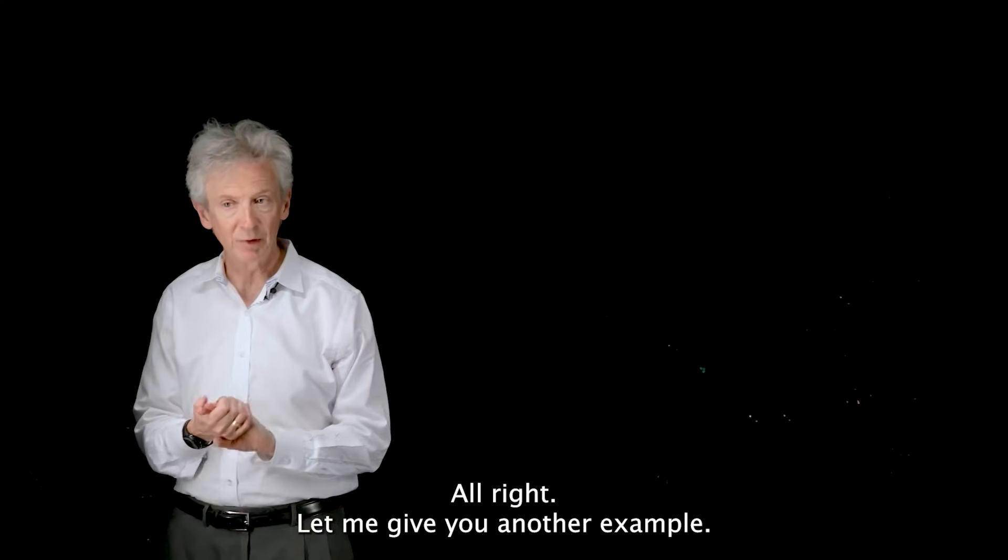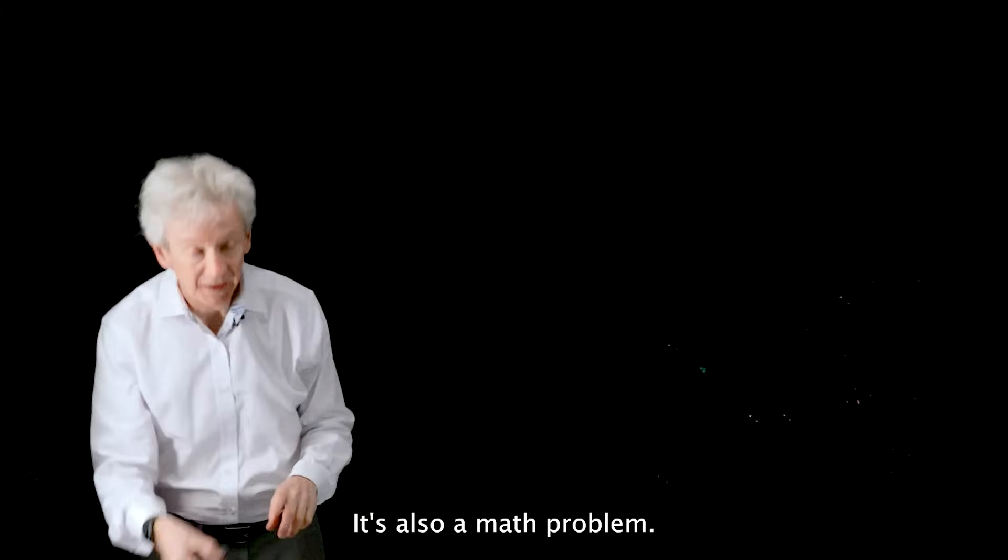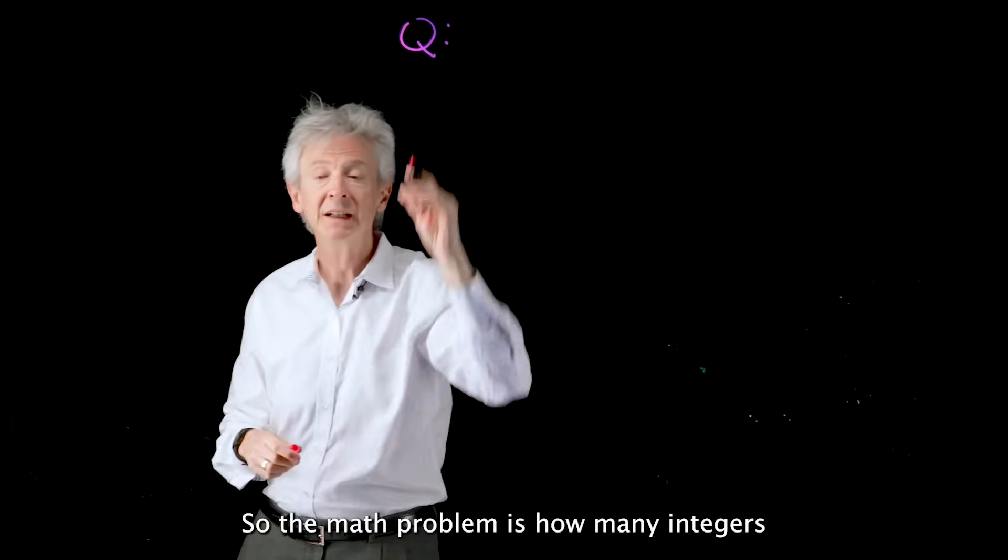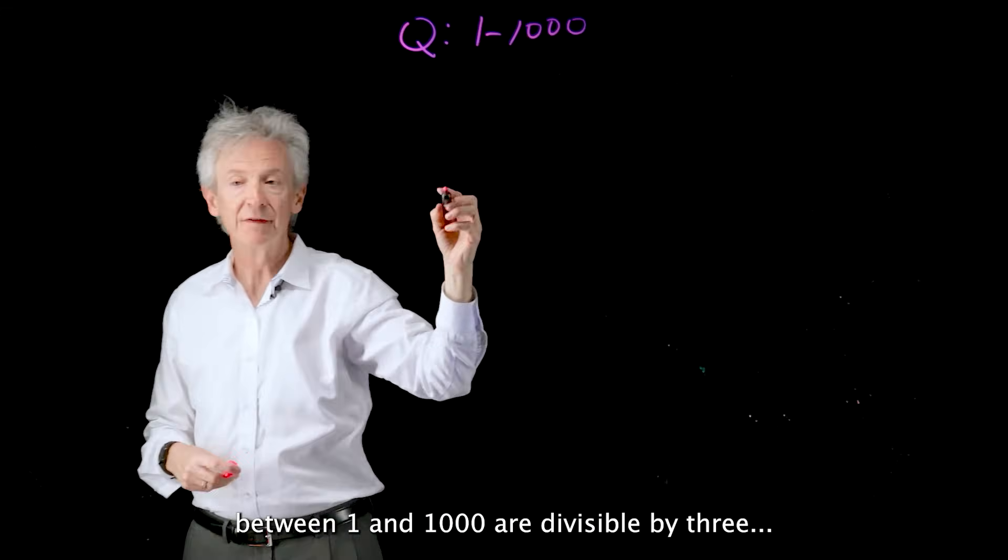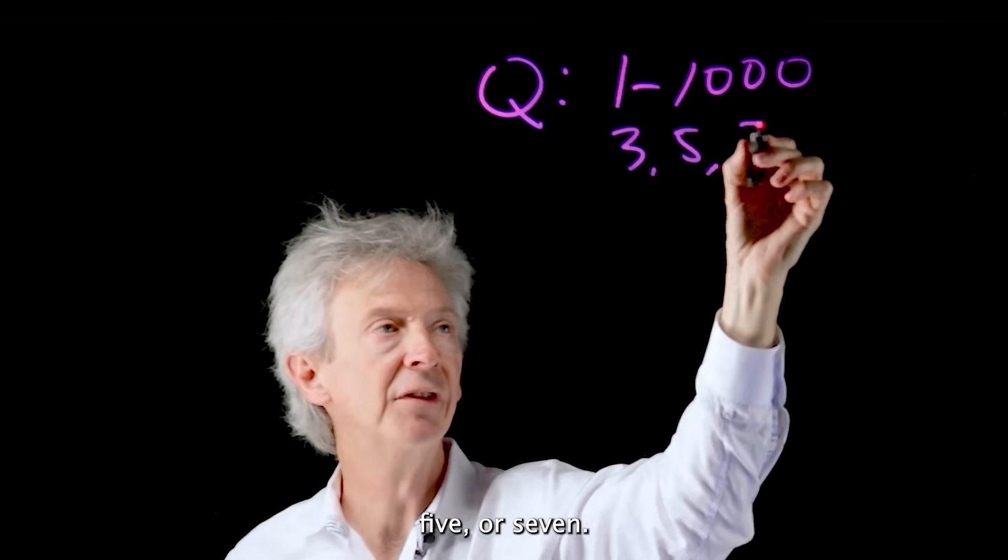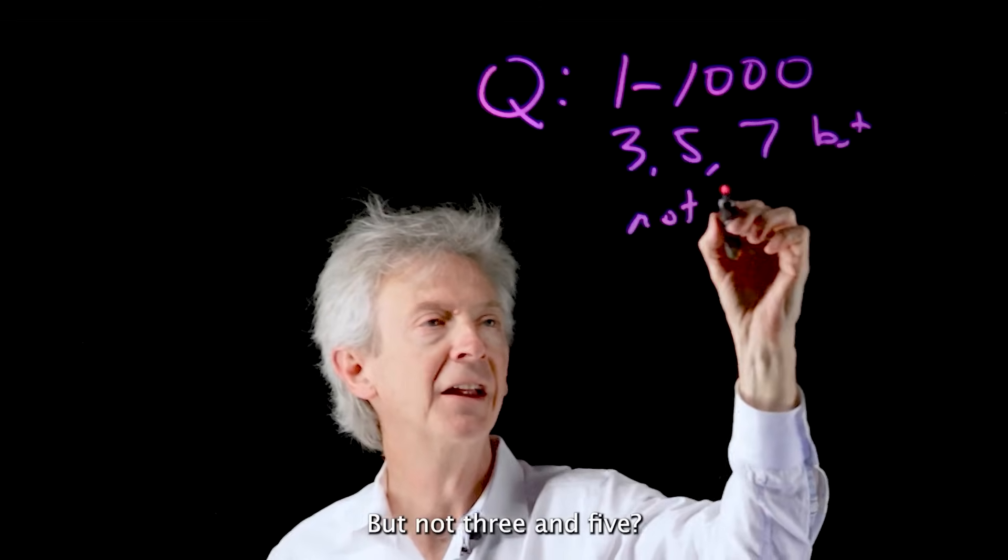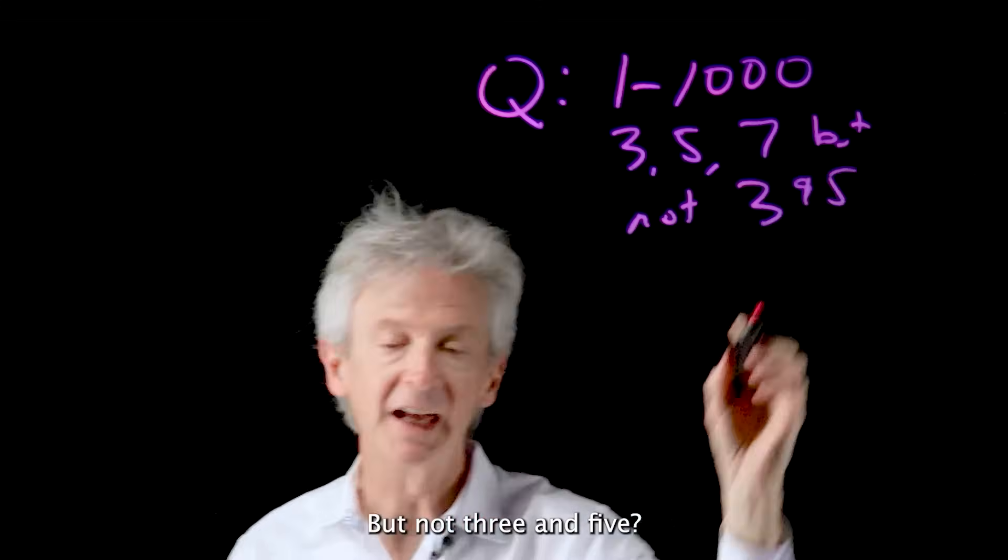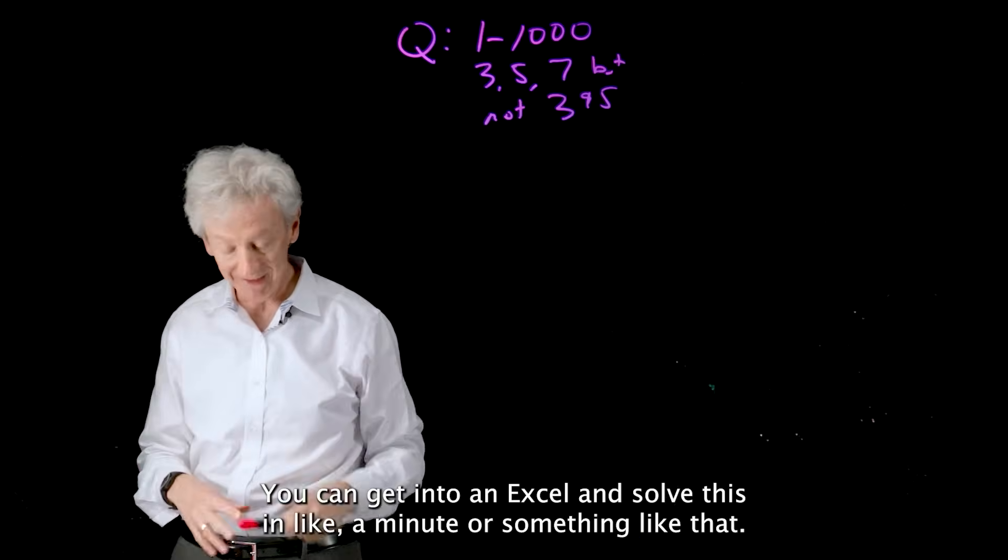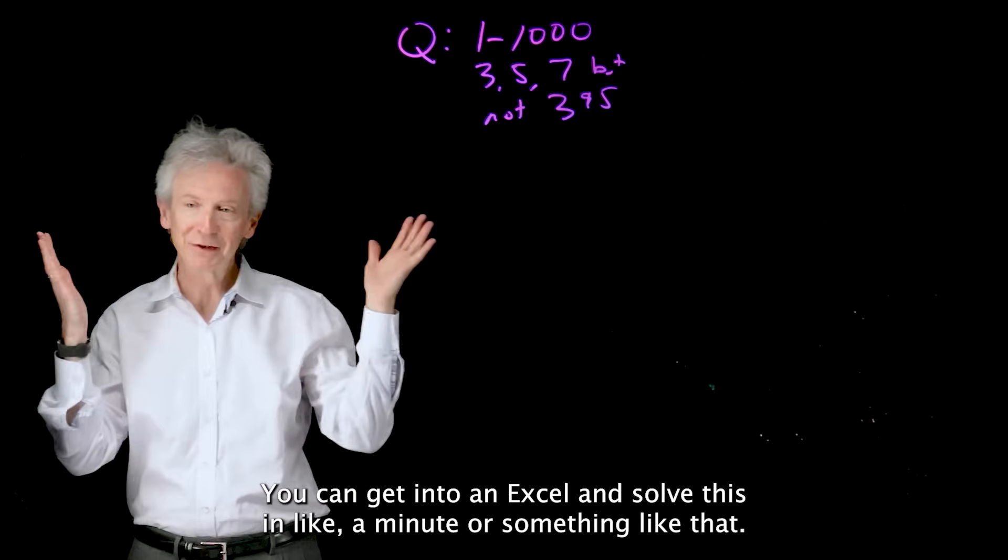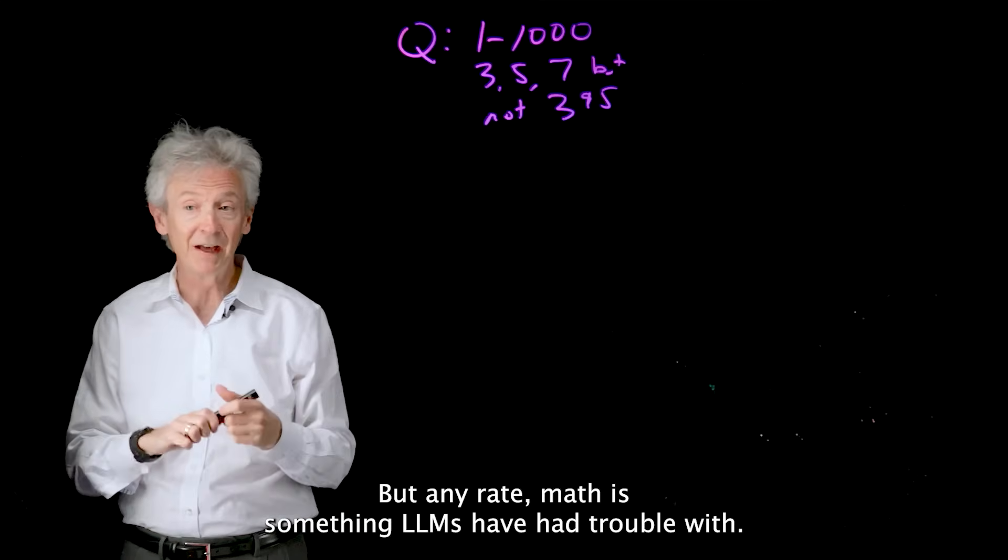All right, let me give you another example, and this might be another way that you can think about how to use debating agents. It's also a math problem. So the math problem is how many integers between 1 and 1,000 are divisible by 3, 5, or 7, but not 3 and 5. So not the world's most complicated math problem. You can get into an Excel and solve this in like a minute or something like that. But anyway, math is something LLMs have had trouble with.